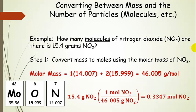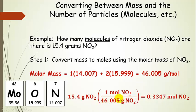You've seen a lot of these steps before, and now we're just going to start stringing them together to solve one whole problem. We start with mass, and since moles are the bridge, we have to convert mass to moles using the molar mass of nitrogen dioxide. Calculating it: one nitrogen plus two times the molar mass of oxygen gives us 46.005 grams per mole. Using that molar mass to convert our 15.4 grams of nitrogen dioxide to moles — since 46.005 grams makes up a whole mole and we have 15.4 grams — it makes sense that we'd end up with about 0.33, or about one-third, moles of nitrogen dioxide.